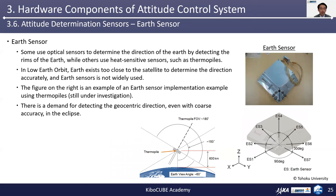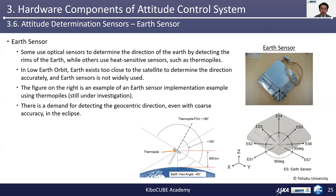The next sensor is the Earth sensor. Some Earth sensors use optical instruments to determine the direction of the Earth's center by detecting the rims of the Earth, while others use heat-sensitive sensors such as thermopiles. In low Earth orbit, Earth exists too close to the satellite to determine the direction accurately, and hence Earth sensors are not widely used. The figure on the right is an example of an Earth sensor implementation using thermopiles, which is still under investigation at Tohoku University. There is a demand for detecting the geocentric direction, even with coarse accuracy, especially on the eclipse side of the Earth, as you cannot have information about the sun vector.